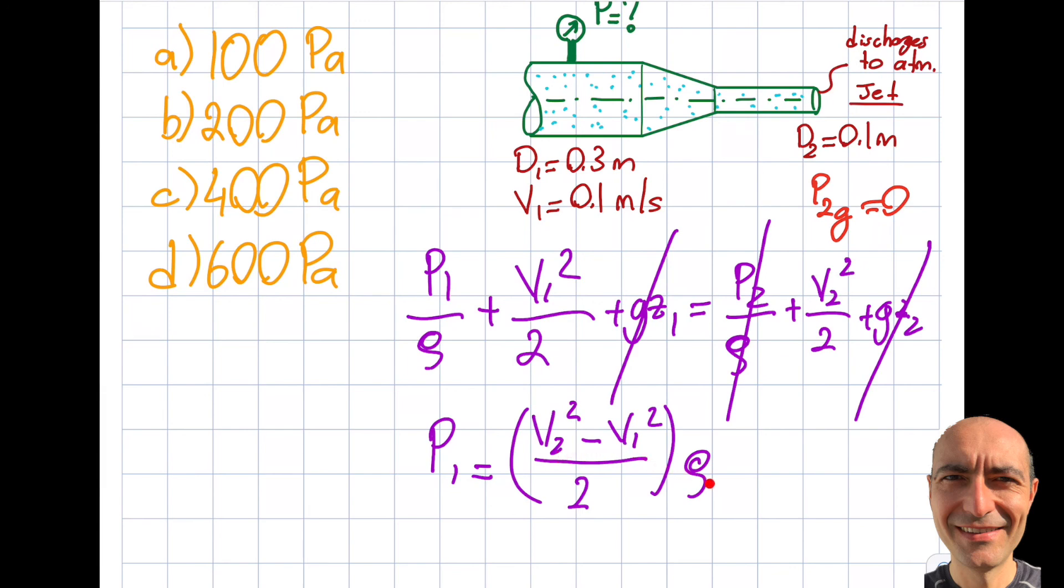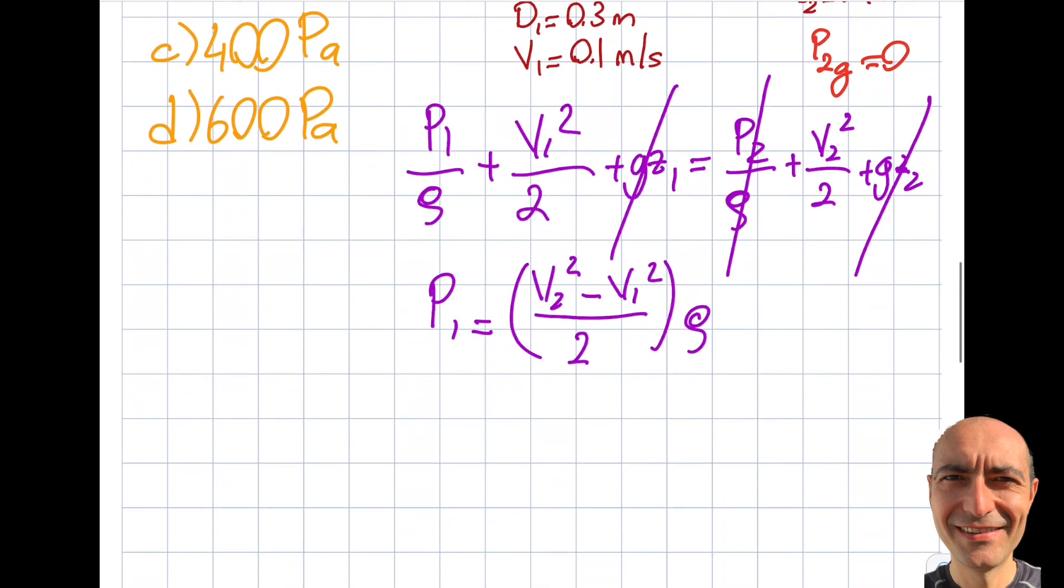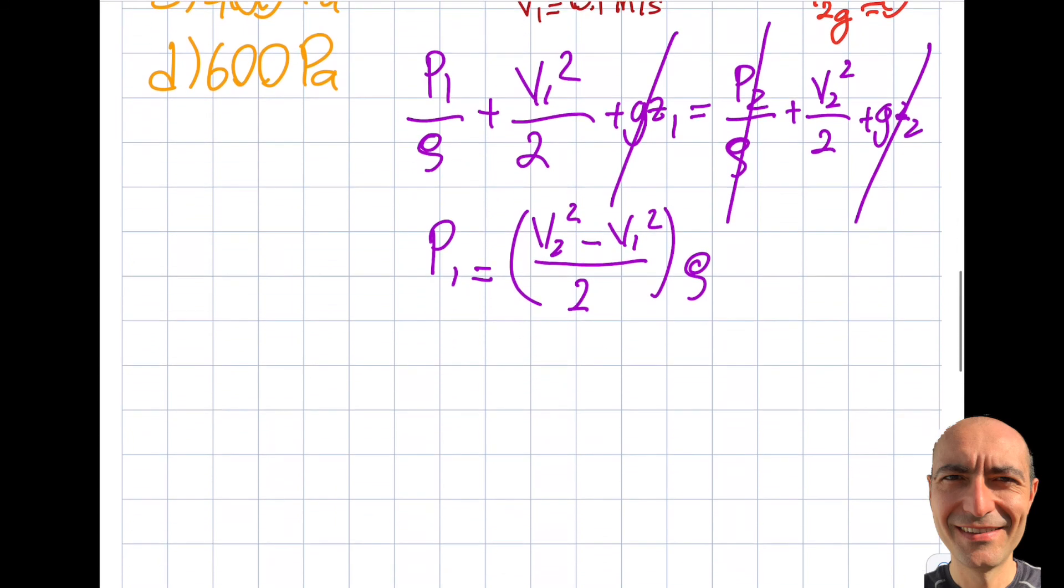Density is known from the reference manual as 1000. The only thing standing between me and the answer is V2. To find V2, I recommend you watch the previous practice problem. It'll be easier this time because this is water with one inlet and one exit. My formula from the reference manual is V1A1 equals V2A2.